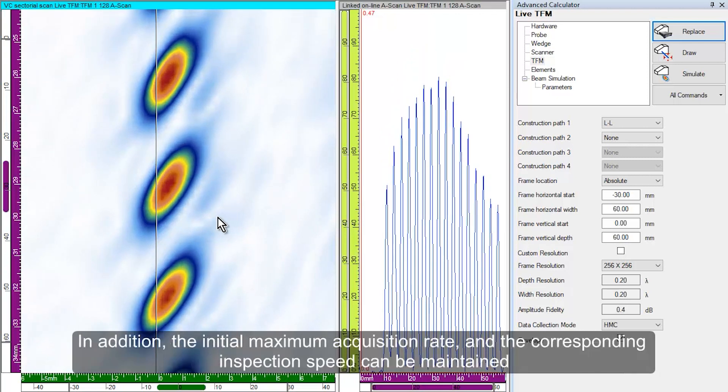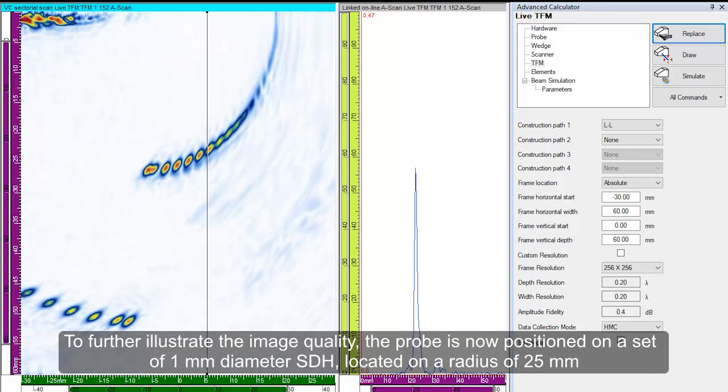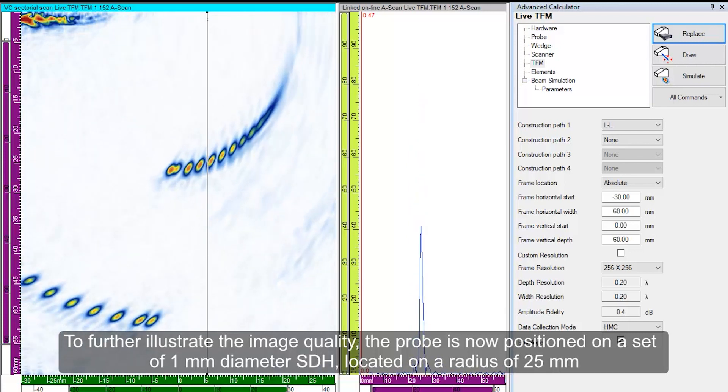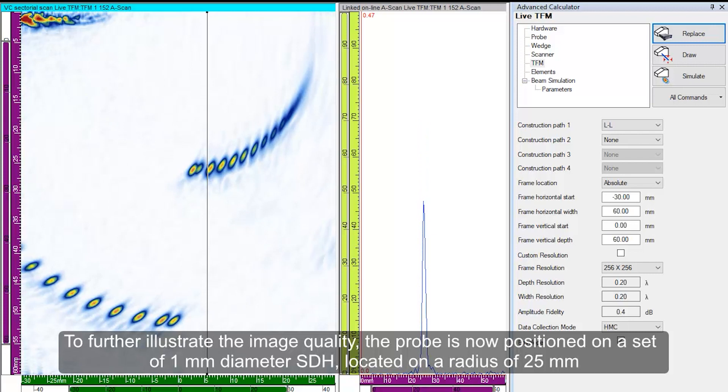In addition, the initial maximum acquisition rate and the corresponding inspection speed can be maintained. To further illustrate the image quality, the probe is now positioned on a set of 1 mm diameter side drilled holes located on a radius of 25 mm.